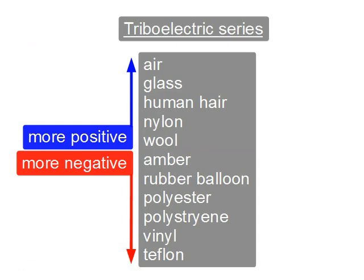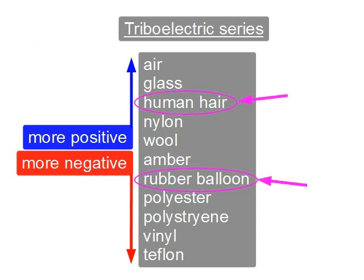Also, the farther apart the two materials are in the series, the better it works. So rubber, like a rubber balloon, is far apart from hair, so they work well together.